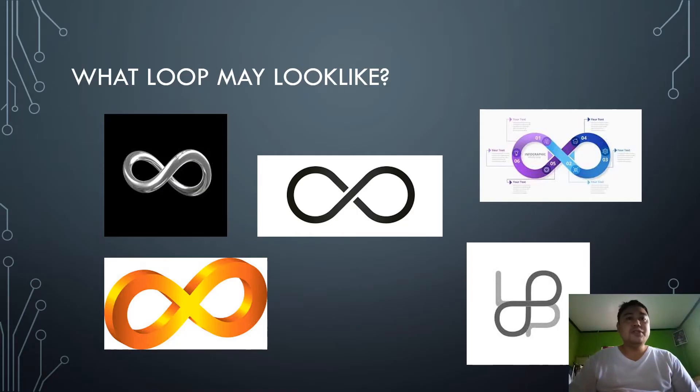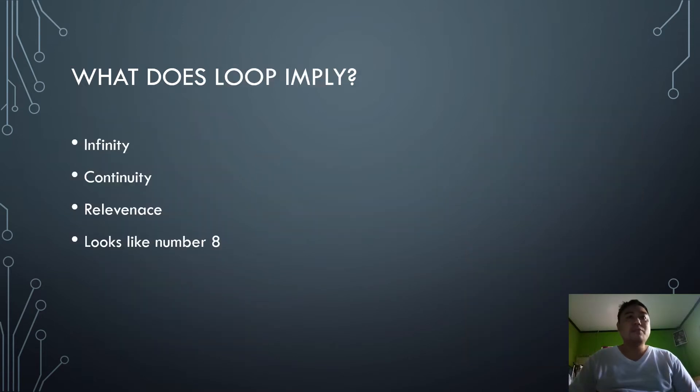First things first, we have to answer the question: what loop may look like? So as you can see here, a loop looks like an inverted 8. What does a loop imply? It implies infinity, continuity, relevance, or it looks like number 8, but it's inverted.